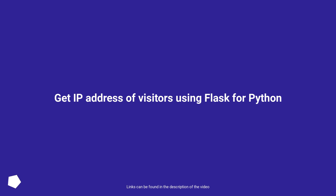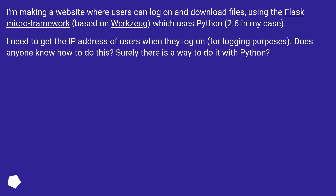Get IP address of visitors using Flask for Python. I'm making a website where users can log on and download files using the Flask micro-framework, which uses Python 2.6 in my case. I need to get the IP address of users when they log on for logging purposes. Does anyone know how to do this? Surely there is a way to do it with Python.